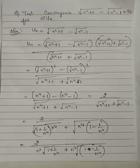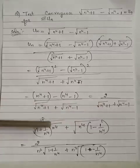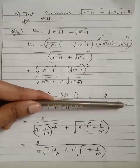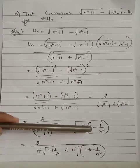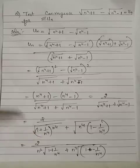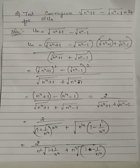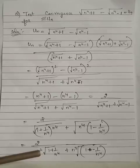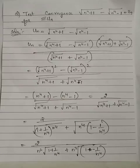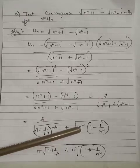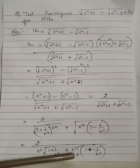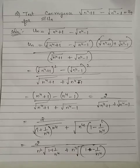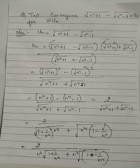We now take n raised to 4 common from inside each square root in the denominator. For each term, taking n⁴ outside the square root gives n squared outside, since the square root of n raised to 4 is n squared. So we have n squared as a common factor for both terms in the denominator.